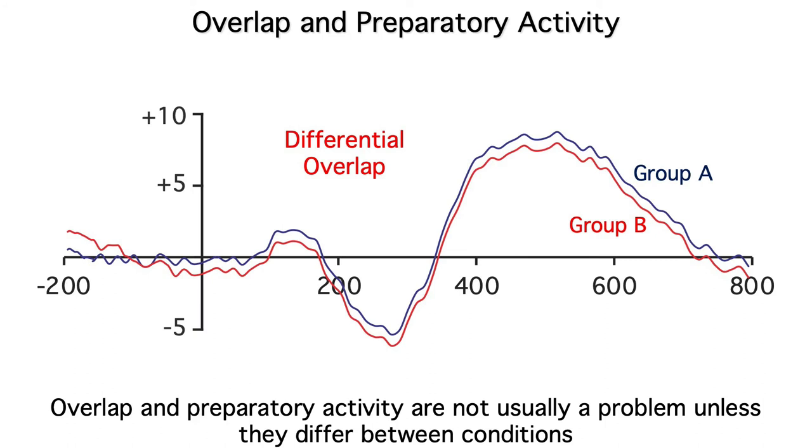However, if the different conditions are in different blocks of trials, or you're comparing different groups of subjects, the preparatory activity or overlap may differ between the waveforms. So whenever you look at ERP waveforms, you should look closely at the baseline to see if the tilt is different for the waveforms being compared.